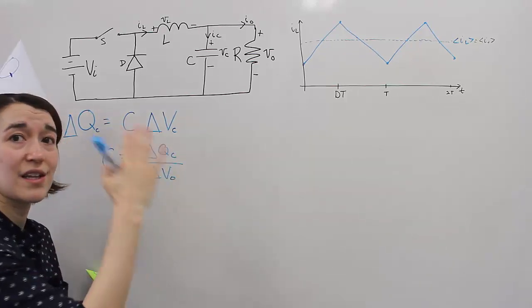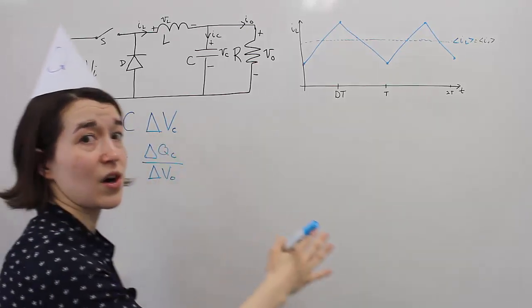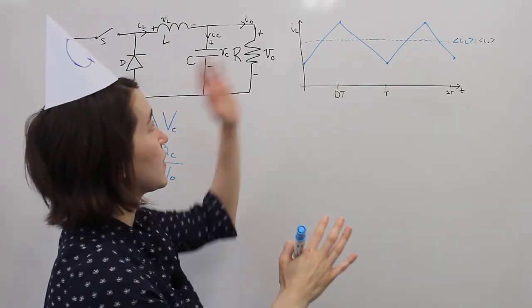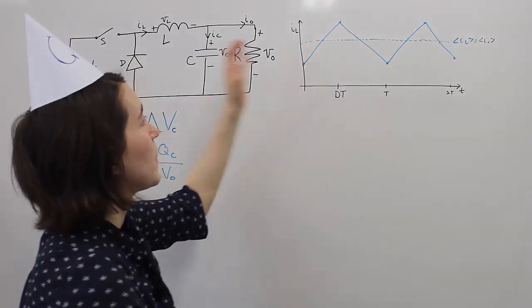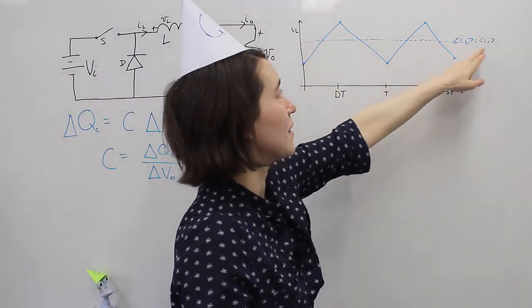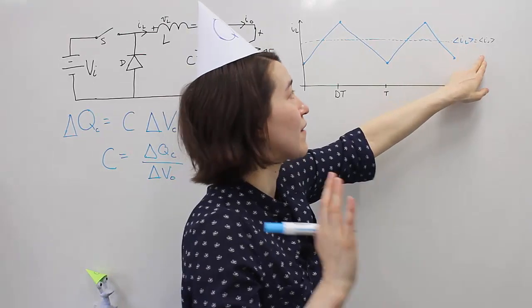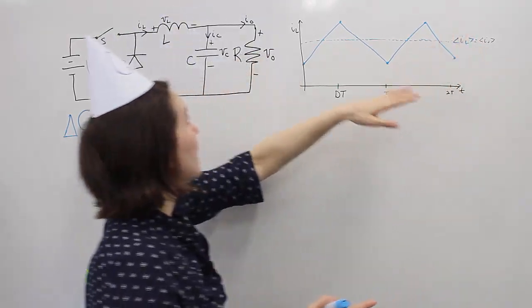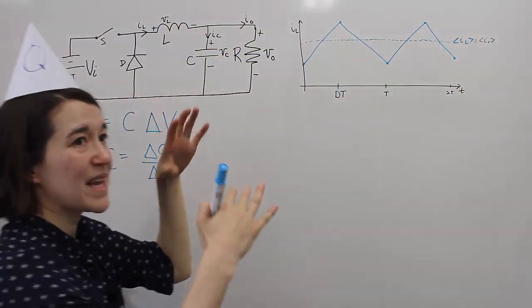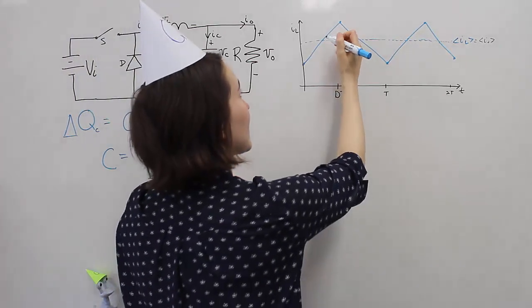To do this, now we need to calculate Q. Q is the charge. And if we look at this figure, because the average inductor value is the average output current, the capacitor just has to make up this difference. And the difference is shown here.